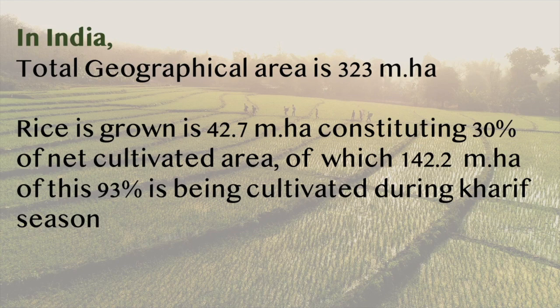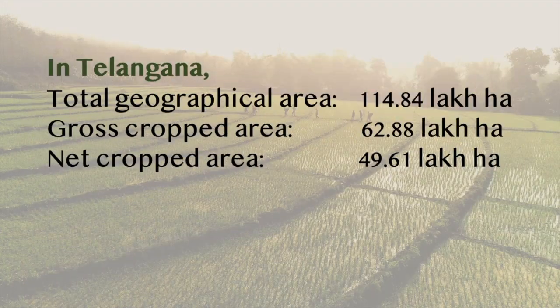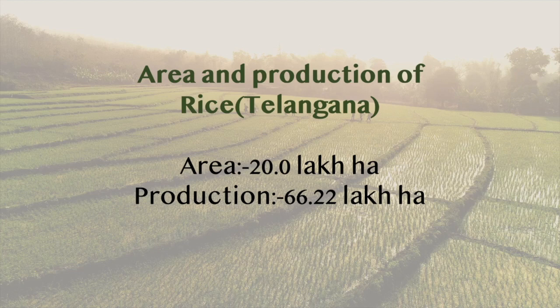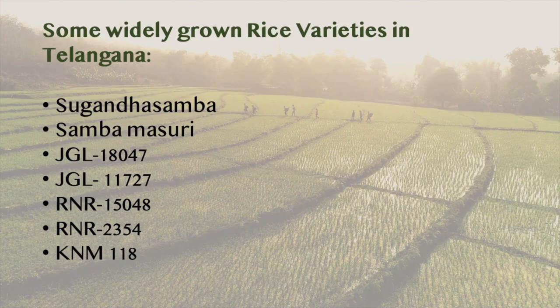In India, the total geographical area is 323 million hectares. Rice is grown in 42.7 million hectares, constituting 30% of net cultivated area, of which 93% is cultivated during the kharif season. In Telangana, the total geographical area is 114.84 lakh hectares and the net cropped area is 49.61 lakh hectares. The area under rice production in Telangana is 20 lakh hectares with production of 66.22 lakh tonnes.